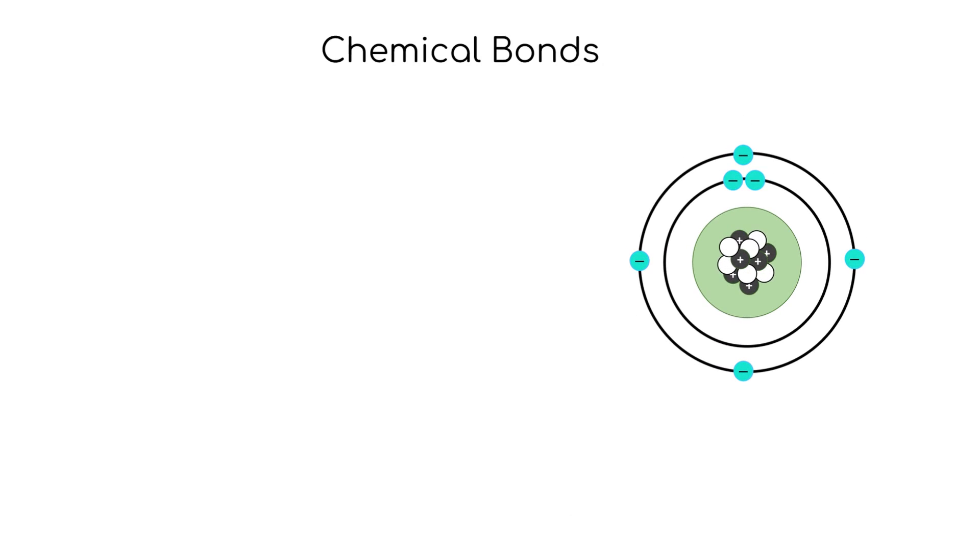Atoms are held together by chemical bonds, and there are three types of bonds: ionic, covalent, and polar covalent.